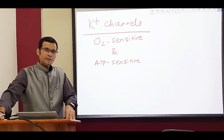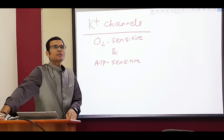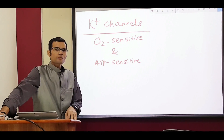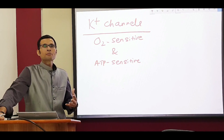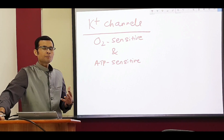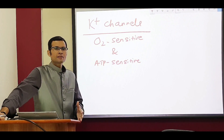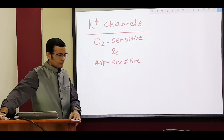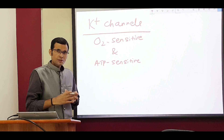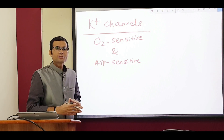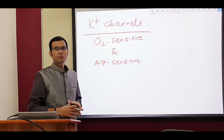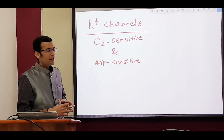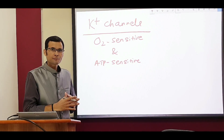Let's understand these special types of potassium channels which are present at a variety of places in the human body: the oxygen-sensitive potassium channels and ATP-sensitive potassium channels. Let's try to understand how they function.